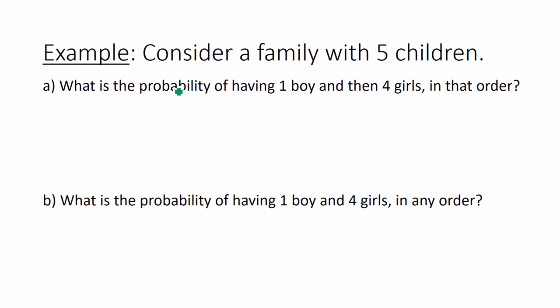So let B equal boy, let G equal girl. So the first one has to be a boy. So if I'm having five children I have a boy on the first child and then the other four children have to be girls.